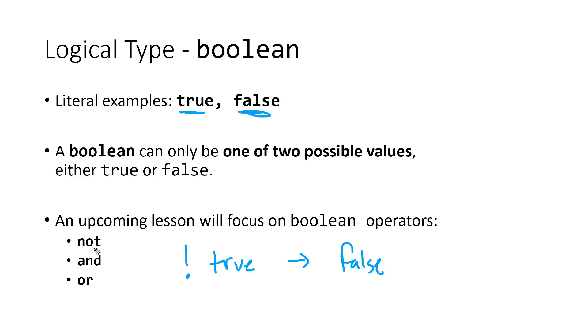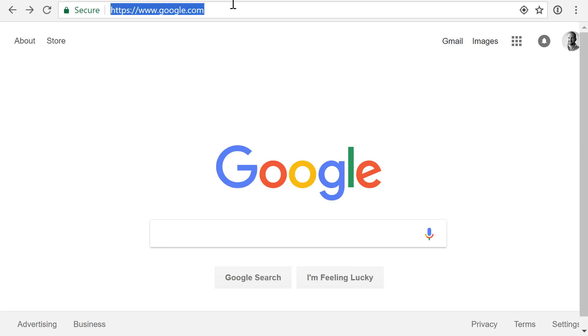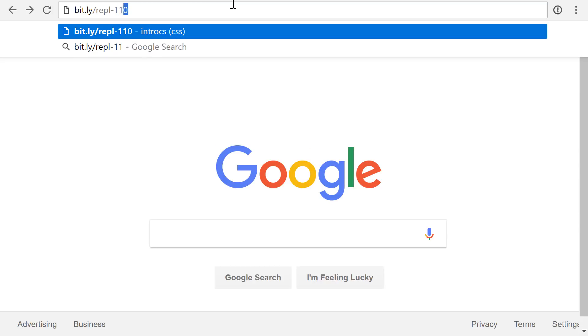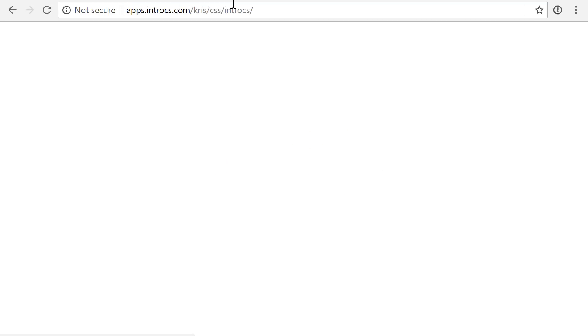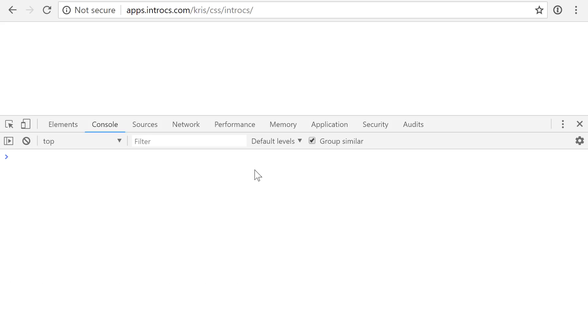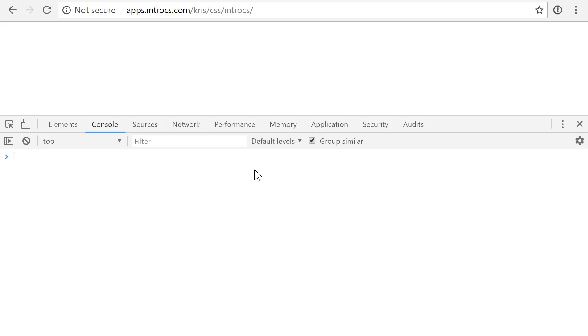We'll talk about not as well as and and or in much more depth in an upcoming video. Now that you've seen these three primitive data types, I would encourage you to go to the interactive REPL console by going to bit.ly slash repl dash 110 and opening up your developer console. The way that you can do that is you press Ctrl Shift J on Windows or Ctrl Option J on Mac.